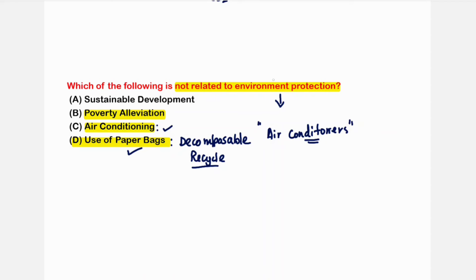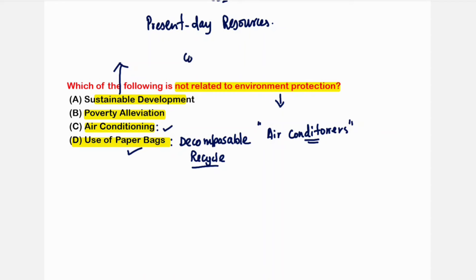Option B — poverty elevation — has no direct relation to environmental protection. Option A is sustainable development, which means keeping a sustainability approach so that present-day needs are met without compromising future generations.